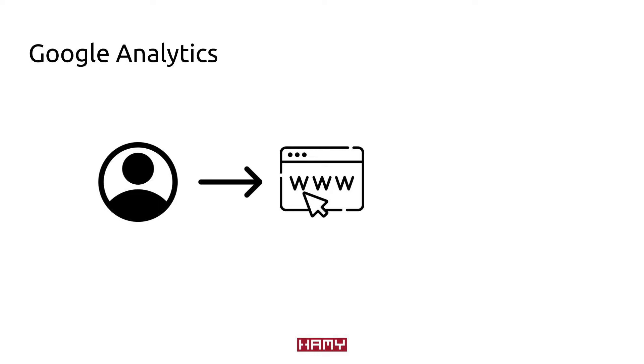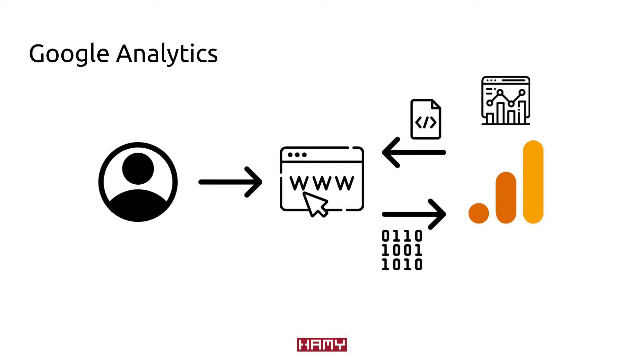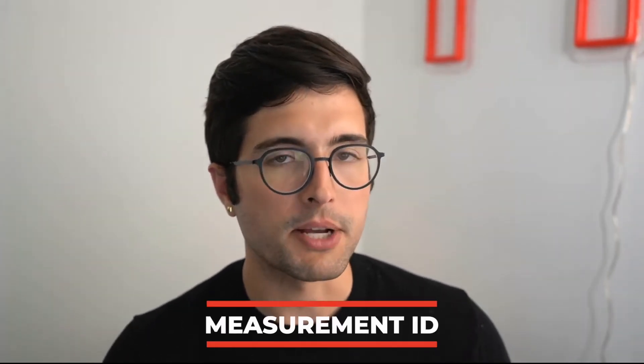The way that Google Analytics works is that your visitors are going to go to your website, then your website is going to download a library from Google, and then we're going to use this library to send data back to Google. Google Analytics will aggregate all of this data, and this is how we're going to get useful insights. In order to tell Google what site we're logging from and how we want our data aggregated, we need to send them a measurement ID.